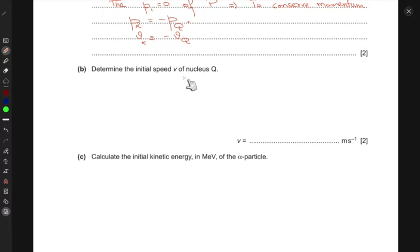Part (b): Determine the initial speed V of nucleus Q. We'll use the principle of conservation of momentum which states that momentum initially equals momentum finally. Initial momentum is zero, and final momentum is the total momentum of nucleus Q plus the momentum of the alpha particle.